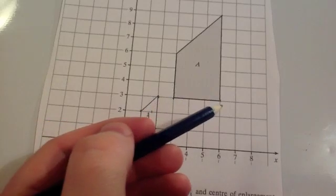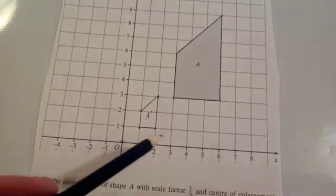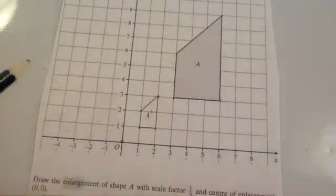And let's just check. This is 3 across, this is 1 across. Well, if you divide these sides by 3, you would get 1 across. Instead of 6 up, you would get 2 up. Yep, so it works.